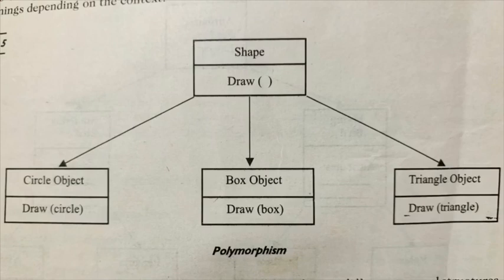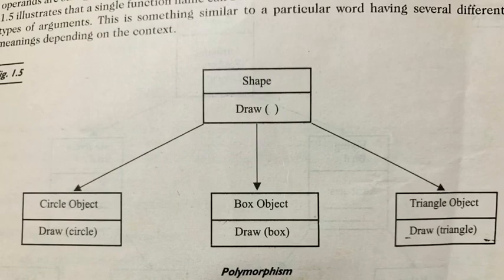In this picture, it shows a single function name that can be used to handle different number and different types of arguments. Here you can see in these objects, circle, box and triangle, the function name draw is same for all. But the argument inside it is different.